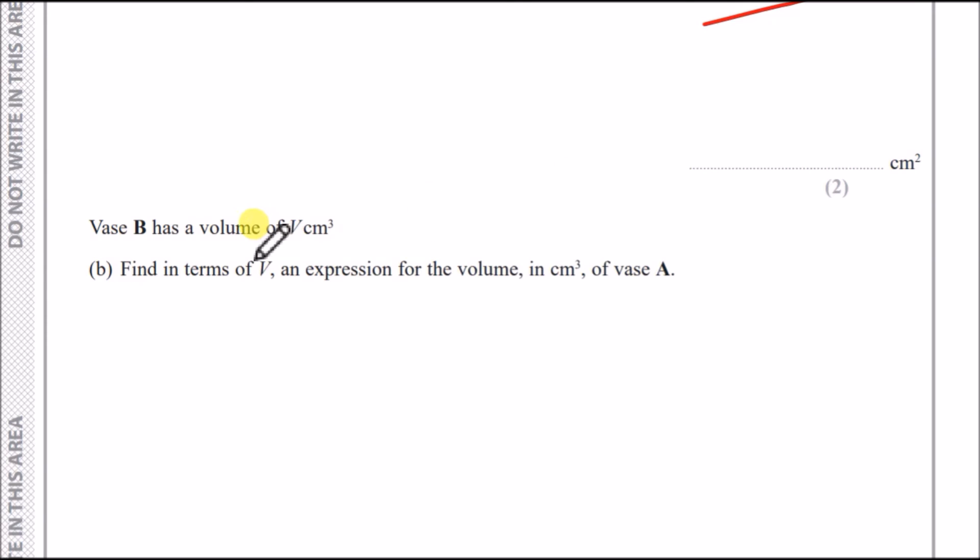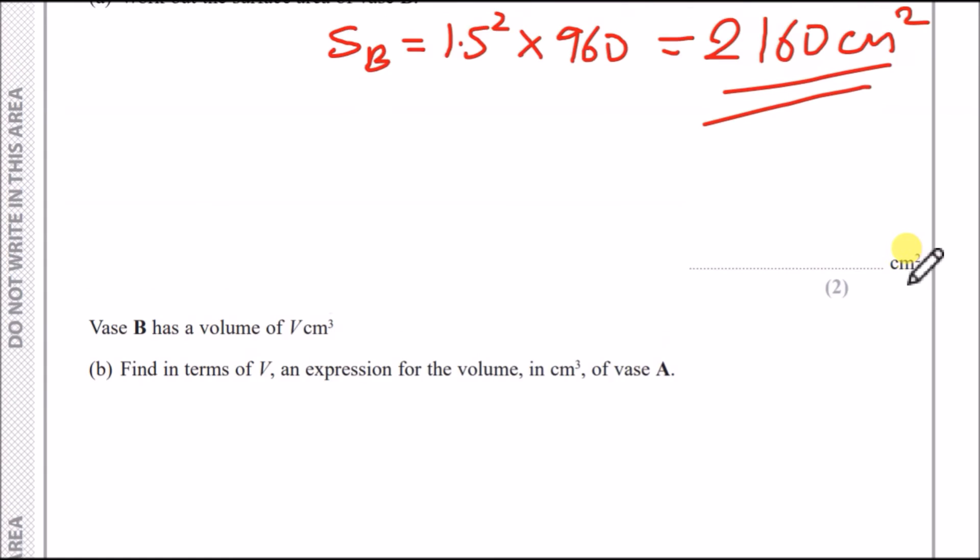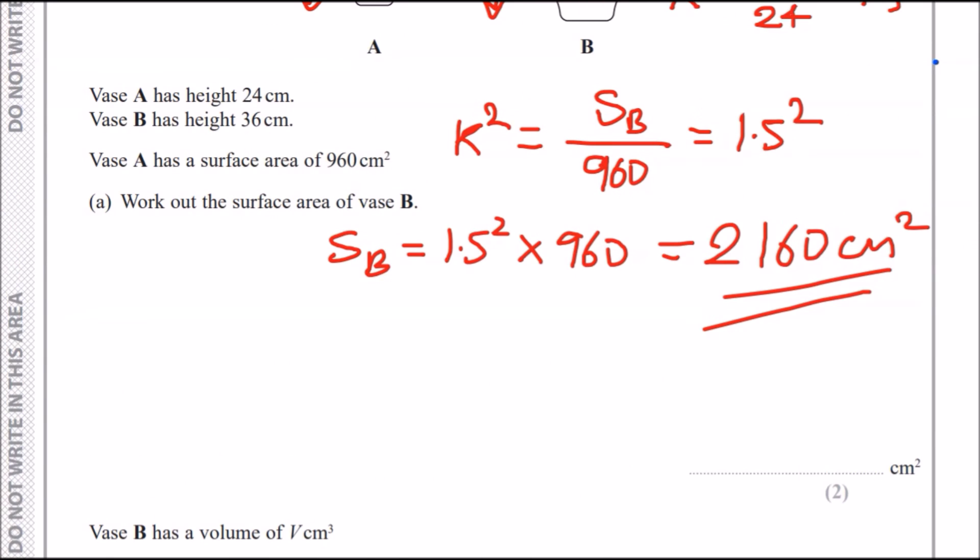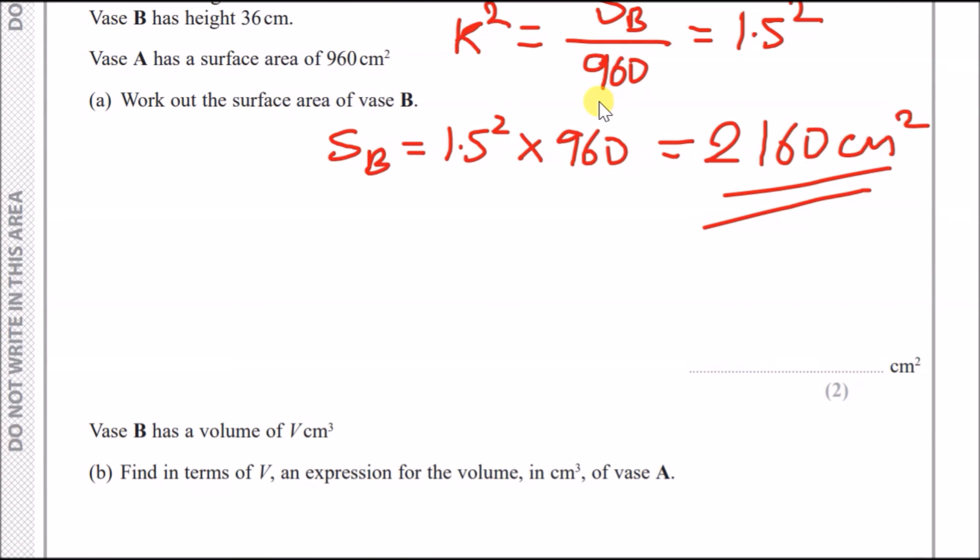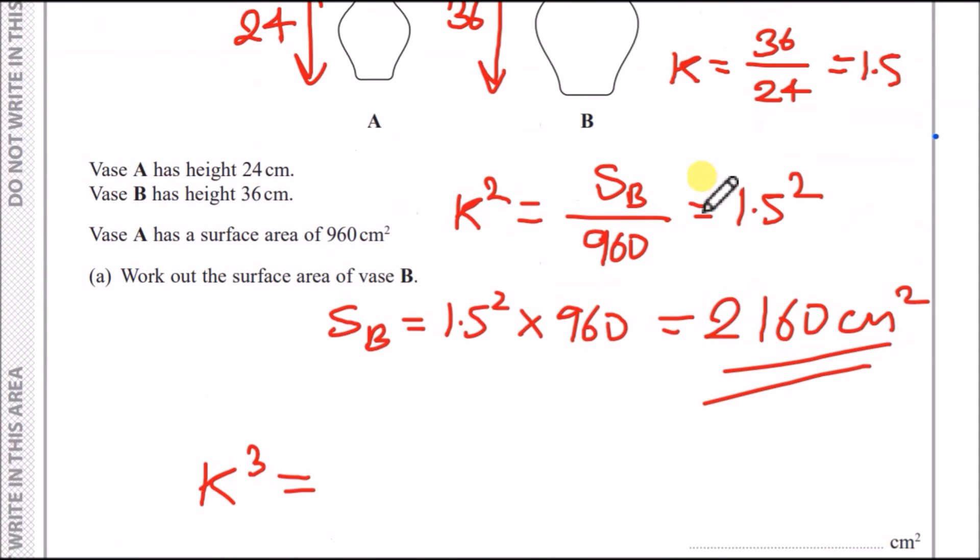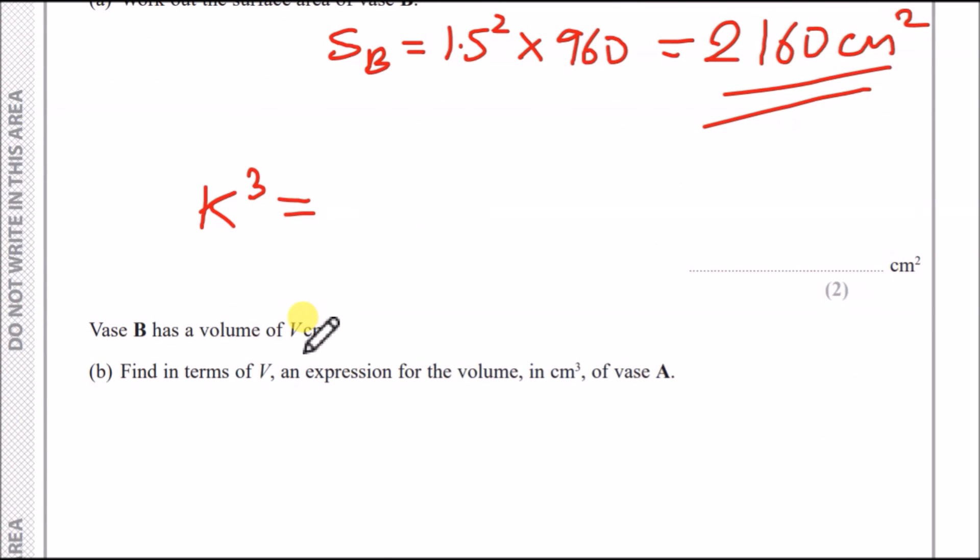Now, for part B, it says vase B has a volume of V centimeter cubed. Find in terms of V an expression for the volume in centimeter cubed of vase A. We're going to literally mimic the idea here. Because we're dealing with volumes, instead of K squared, we're going to use K cubed equals the bigger shape's volume. So the volume of B, we say, well, he calls it V, and we want to find the volume A, of vase A. So we're going to just call this V_A.